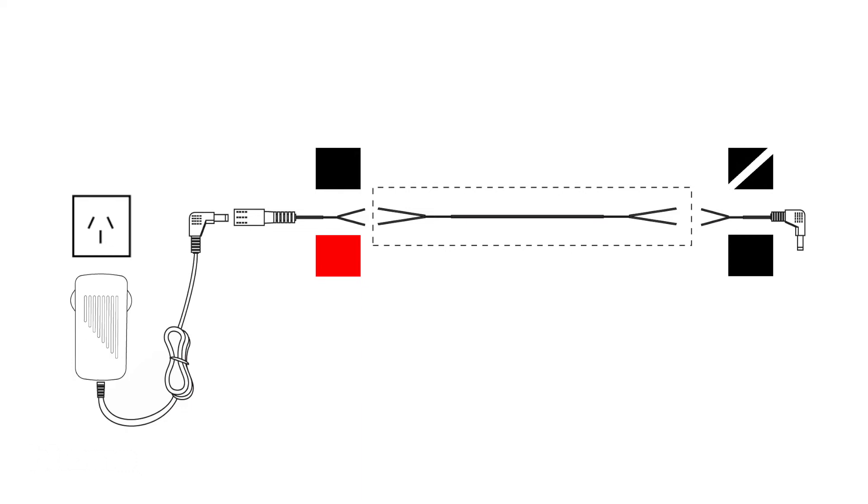You will need to weld two wire cable to the red and black wires from the female connector, and then weld the other side of the cable to the black and two colored black and white wires to the male connector.